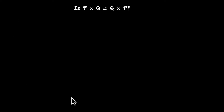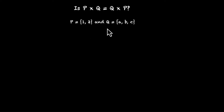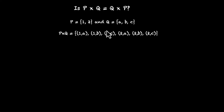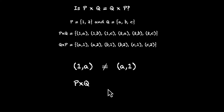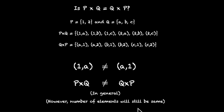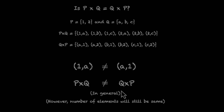Let's wrap this up with one last question. Is the Cartesian product of P and Q the same as the Cartesian product of Q and P? The answer is no. If P is {1, 2} and Q is {A, B, C}, then P times Q is {(1,A), (1,B), (1,C), (2,A), (2,B), (2,C)} — six elements. And Q times P is {(A,1), (A,2), (B,1), (B,2), (C,1), (C,2)} — the elements are in reverse order. Because (1,A) is not the same as (A,1), none of these elements match, so P times Q is not the same as Q times P. That's true in general, but the number of elements will still be the same, because multiplication works in both directions. So the sets are not the same, but their number of elements are.